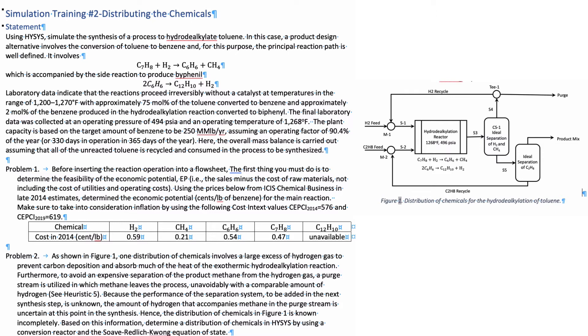The first thing we're going to do is problem one, to actually determine the feasibility of the economic potential for the reaction. Typically, when we do a process from scratch, what we do is calculate the economic potential.